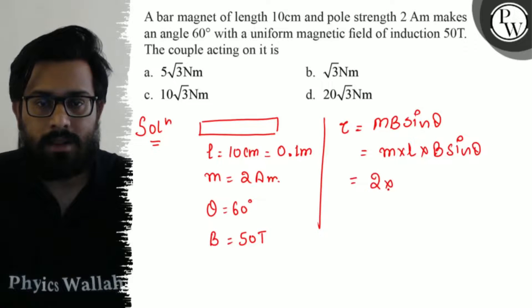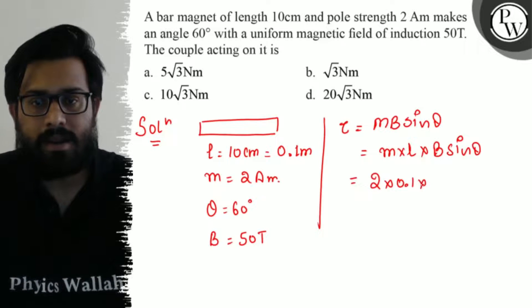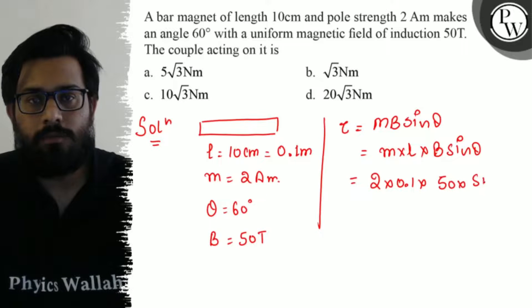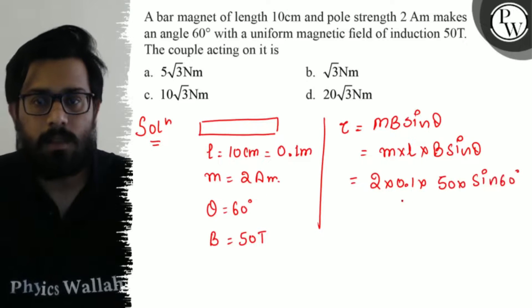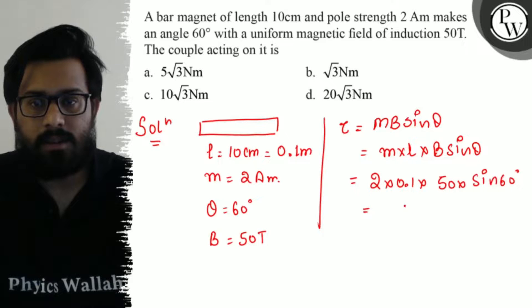So pole strength is 2, length is 0.1, magnetic field is 50 into sine of 60 degree. So it comes up with 10 sine 60 degree.